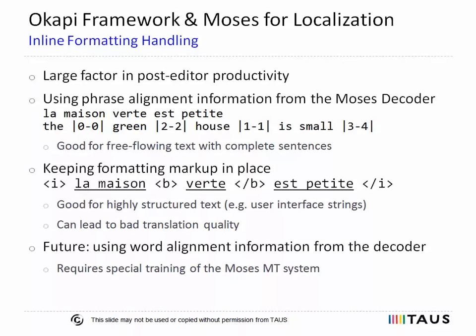The central goal of the Okapi framework and MOSES for localization combination is the preservation of inline formatting and placeholders in text — not only the preservation, but also the placement of formatting and placeholders in the correct or almost correct location in the machine-translation target text. With markup-heavy text, for example HTML, this can be a major factor for post-editor productivity. If the machine translation is excellent but formatting tags and placeholders are simply placed at the end of the translation, the post-editor will still have to insert the markup at the correct locations — probably not the best use of time of a linguistically trained post-editor.